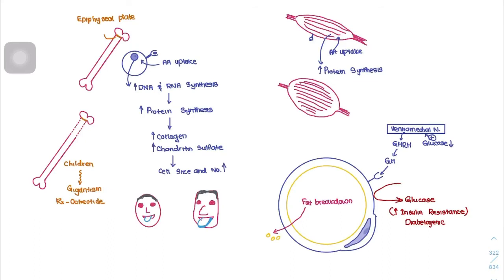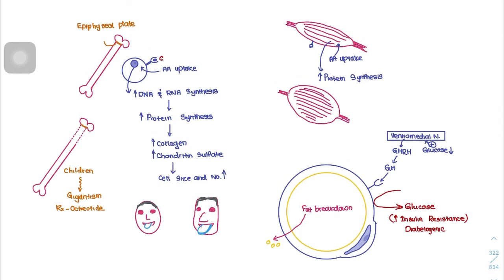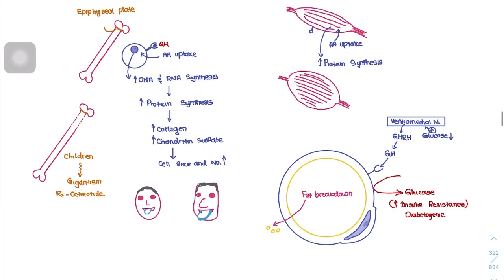Growth hormone acts on bones at the epiphyseal plate, which in children and young adults allows bone growth to occur. Growth hormone binds to chondrocytes and causes an increase in amino acid uptake, which leads to increased DNA and RNA synthesis, protein synthesis via mRNA production, and an increase in collagen and chondroitin sulfate. This eventually causes the cell size and number to increase, causing the bone to elongate.